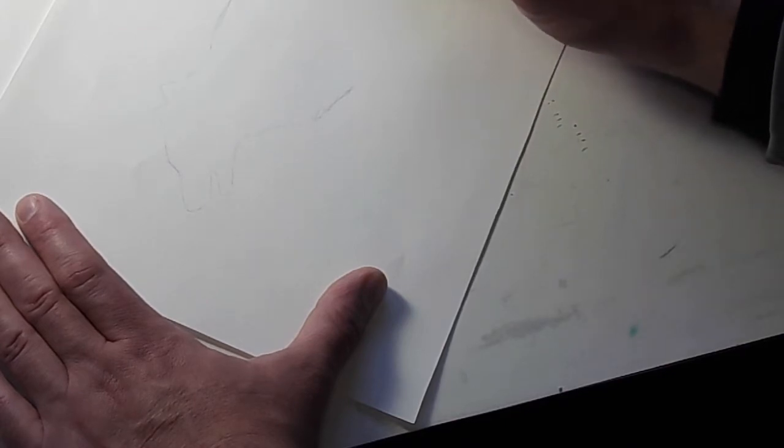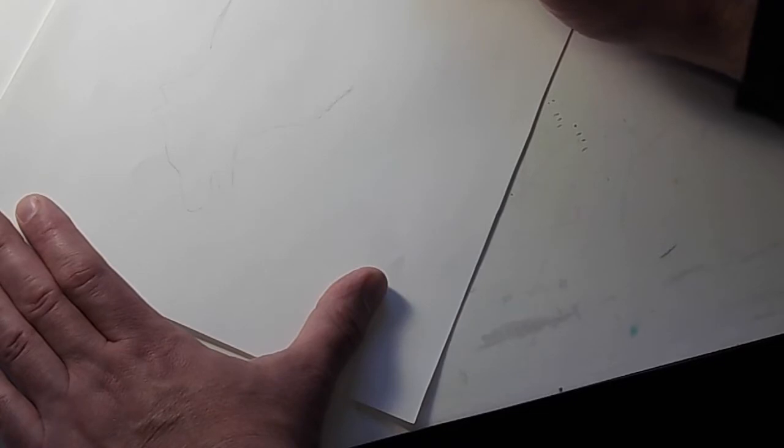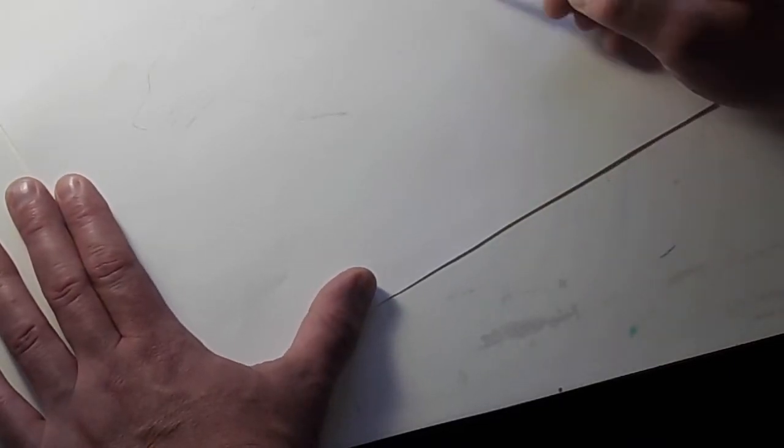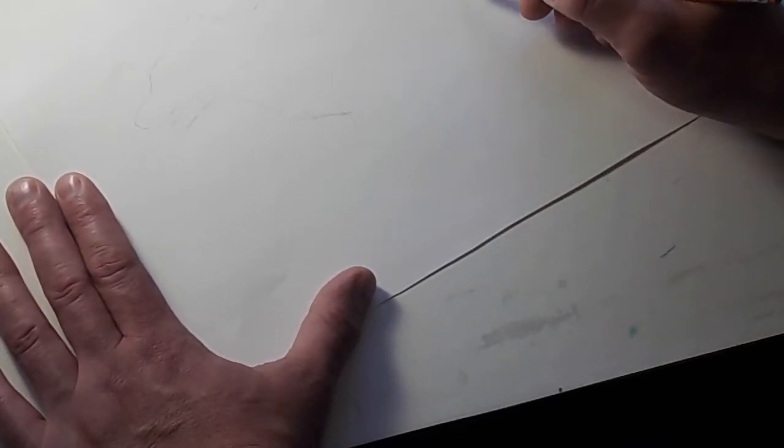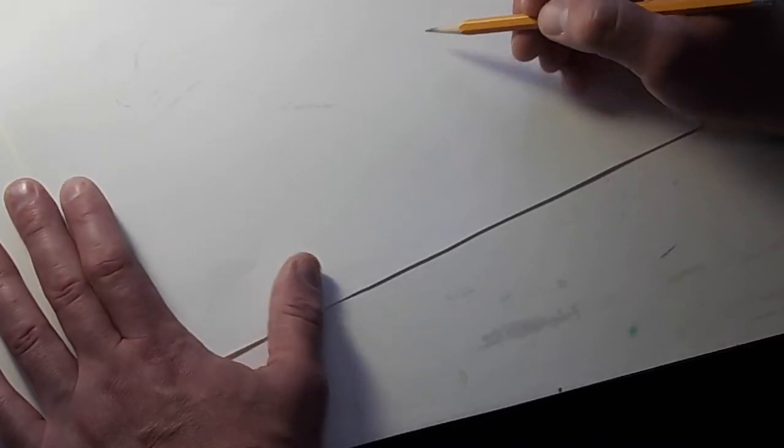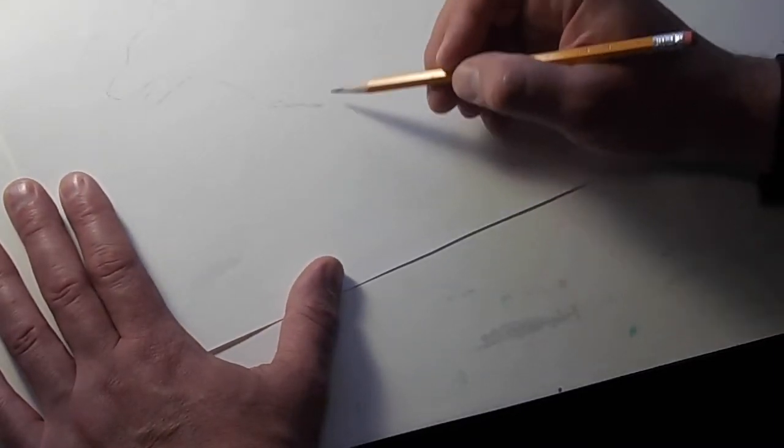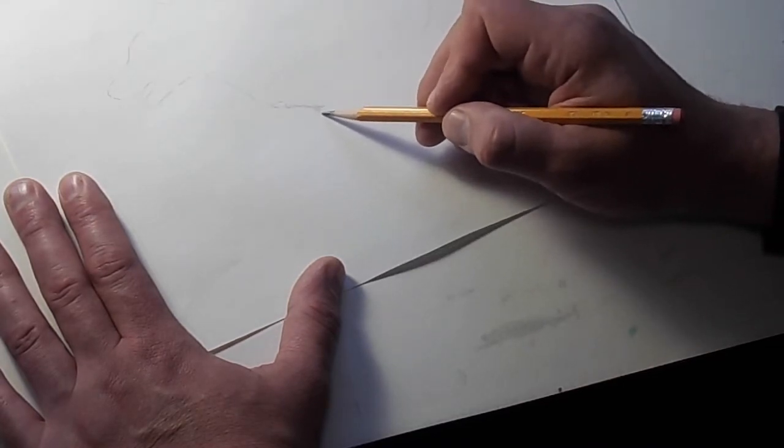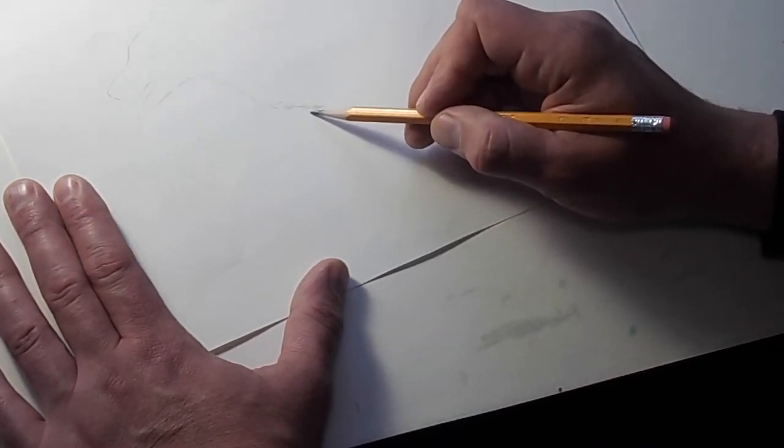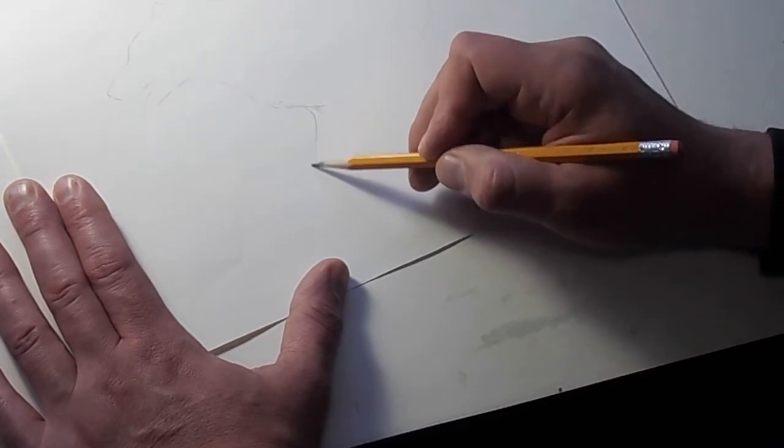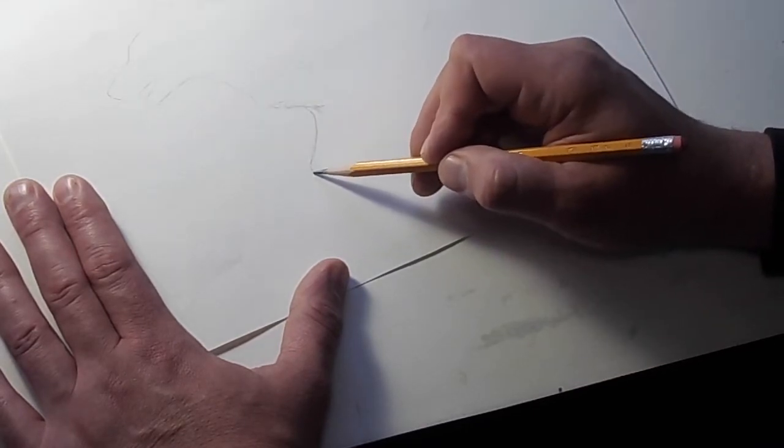And that goes to his tail, which goes out. Bushy tail. This is the under part of it. There. Okay. So this comes down.